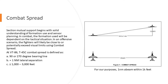We'll start by taking a quick look at the combat spread, and you can more or less ignore all of the data on the left — just look at the picture on the right. For our purposes, we want to be about a nautical mile abeam of each other, within a thousand feet of each other.